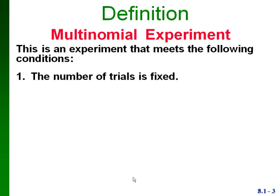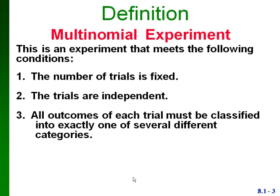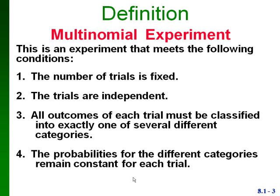We have a fixed number of trials, the trials have to be independent, and all the outcomes have to be classified into exactly one of several different categories. So instead of just two possible outcomes we might have five or six. And the probabilities for the different categories have to be the same for each trial.